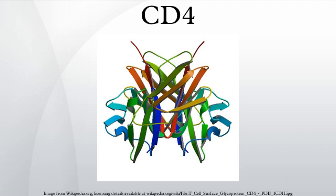MHC class II contains beta-2-microglobulin. The short cytoplasmic intracellular tail of CD4 contains a special sequence of amino acids that allows it to interact with the LCK molecule. CD4 is a co-receptor that assists the T cell receptor in communicating with an antigen presenting cell. Using its intracellular domain, CD4 amplifies the signal generated by the TCR by recruiting an enzyme, the tyrosine kinase LCK, which is essential for activating many molecular components of the signaling cascade of an activated T cell. Various types of T helper cells are thereby produced.